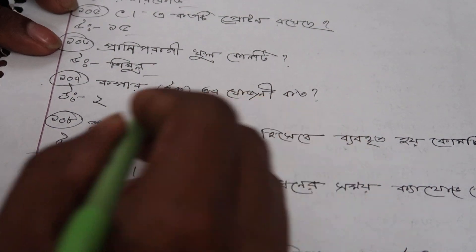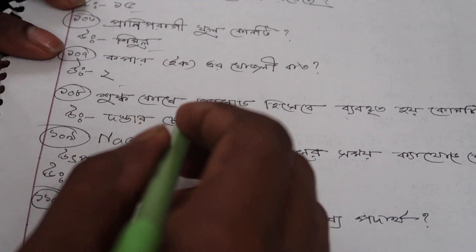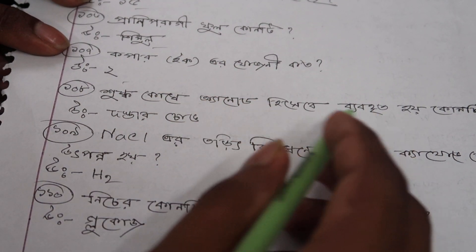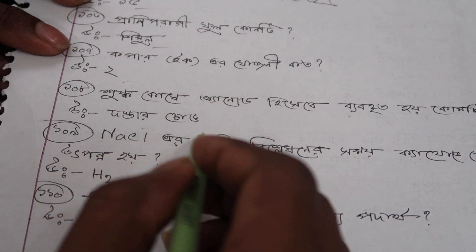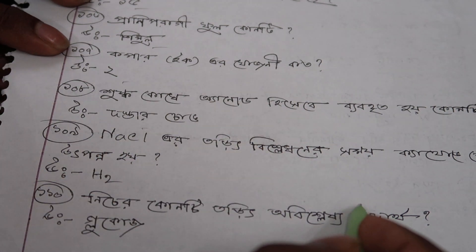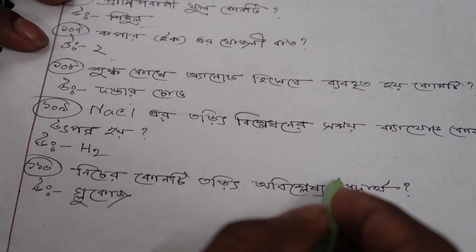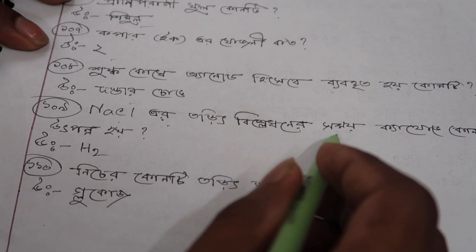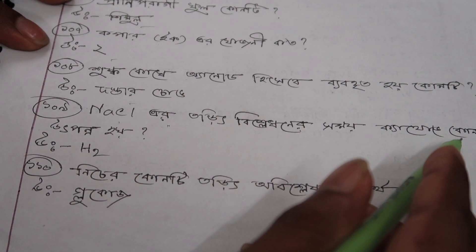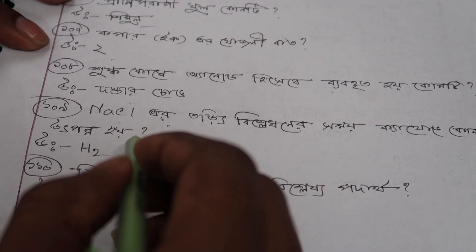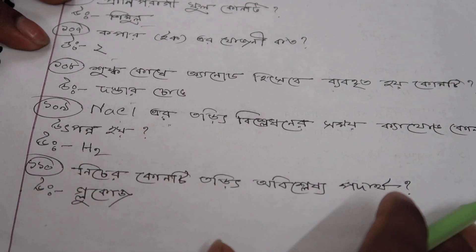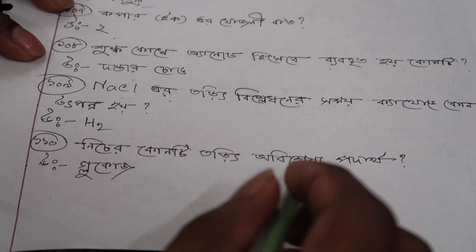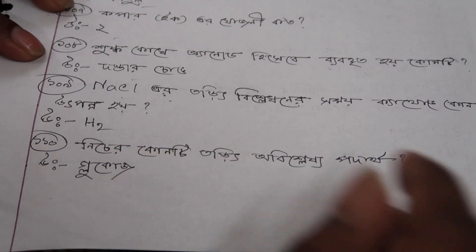कपार, इक एर जोजुनी कतो दुई, सुष कोकोसे एनोड हीशाबे बभभर्थोय कोंटी, दस्तार, Ice cream gusto fluid. Glucose.